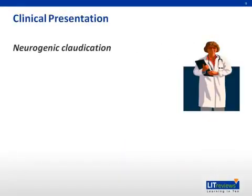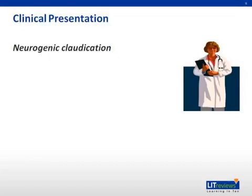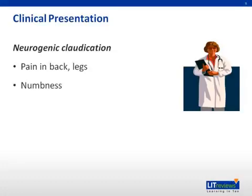So how do these patients present? An important clue to making the diagnosis by your history is by uncovering the signs and symptoms of neurogenic claudication. Neurogenic claudication refers to pain in the buttocks, thigh, or posterior legs that occurs with standing or walking, and most importantly, is not due to peripheral vascular disease. Often, these symptoms are accompanied by numbness, radicular symptoms, or weakness of the lower extremity.